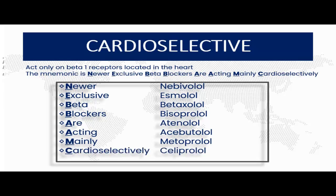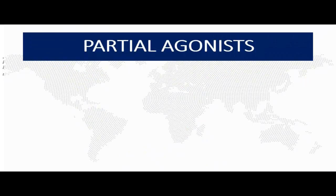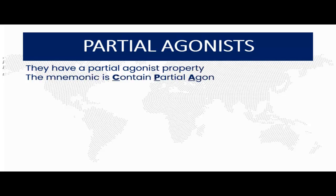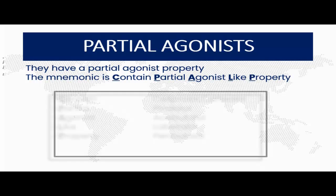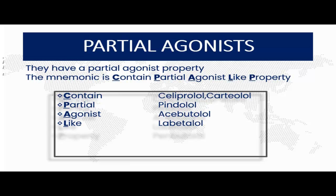The second class is the beta blockers with partial agonist properties. To remember this type, use the mnemonic: 'Contain Partial Agonist-Like Property.' C stands for Celiprolol and Carteolol, P for Pindolol, A for Acebutolol, L for Labetalol, and the last P for Penbutolol.